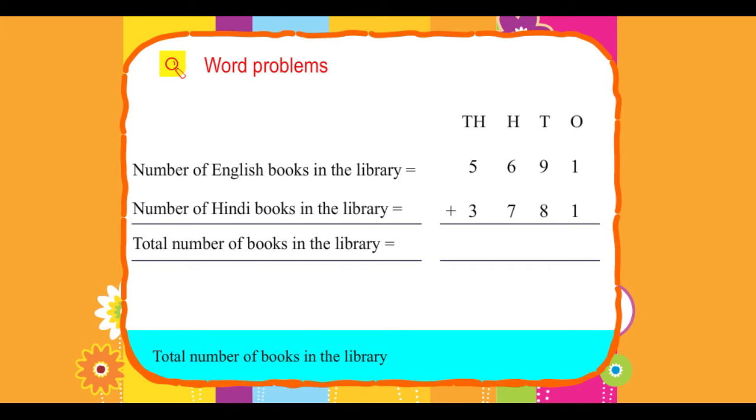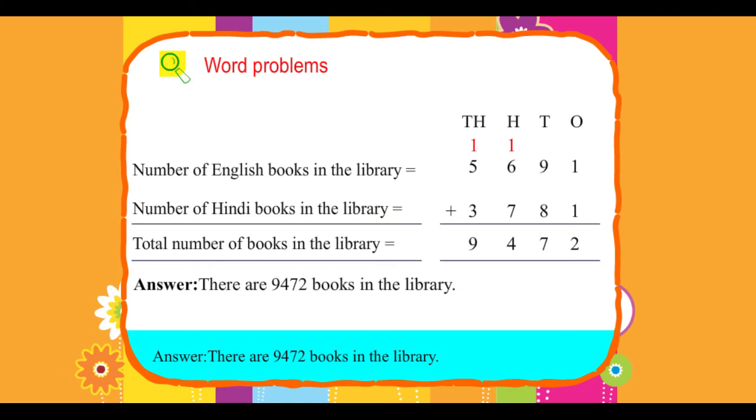Therefore, total number of books in the library equals 9,472. Answer: There are 9,472 books in the library.